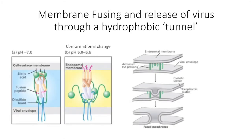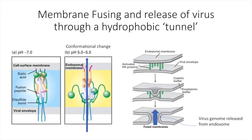The newly adopted conformation is irreversible due to the high energetic cost of returning to a neutral pH conformation. After the conformational change, the viral genome is able to fuse the endosomal membrane to the viral membrane, allowing the influenza virus to escape the endosome and enter the cytoplasm of the host cell. The virus is then able to freely replicate and continue duplicating its genome to infect new cells.